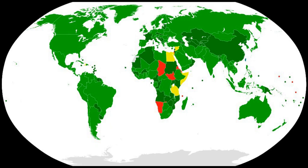The Seventh Review Conference was held in Geneva from 5 to 22 December 2011. The final declaration document affirmed that under all circumstances the use of bacteriological and toxin weapons is effectively prohibited by the Convention, and the determination of states parties to condemn any use of biological agents or toxins other than for peaceful purposes, by anyone at any time.